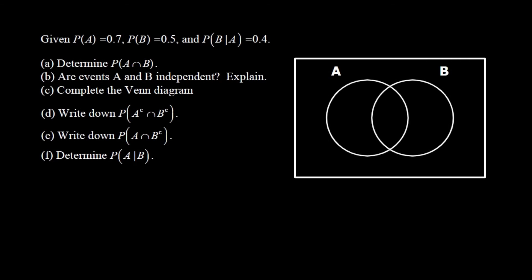In the previous video we examined independent events and mutually exclusive events in great detail. So now we get to apply some of that knowledge in this example where we're given a couple of probabilities. We know the probability of A is 0.7 or 70 percent, the probability of B is 0.5 or 50 percent, and the probability of B given that A has occurred is 0.4 or 40 percent.